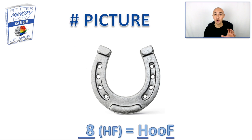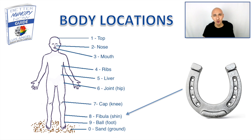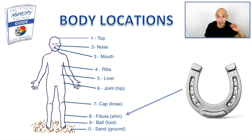Eight, as you see on the screen, is a hoof — like a horse's hoof or horseshoe. The eight has an F or V sound, that's why we have hoof for number eight. Associate the horse's hoof on your fibula, near your shin bone area. Maybe it's stomping on there, or you're throwing the horseshoe around the fibula.